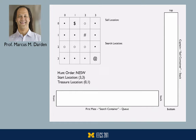We start out by adding the start location to the sail container because the start location is always water. We'll write that in here at 3,3. Every time we push a location into a container, whether it's a search container or the sail container, we want to mark that location as discovered in the map so we don't try to discover it again. This is what we call seeding the container.